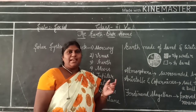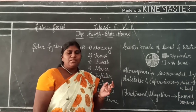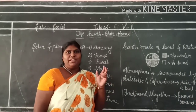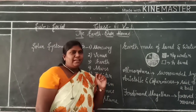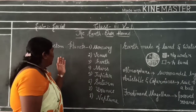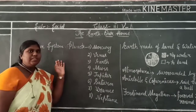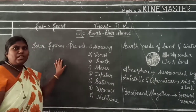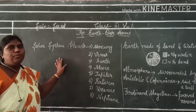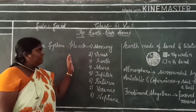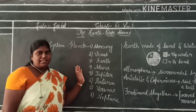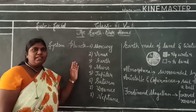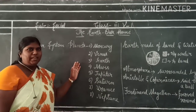A star is also one of the planets. We have the solar system, and in this solar system we have 8 planets.